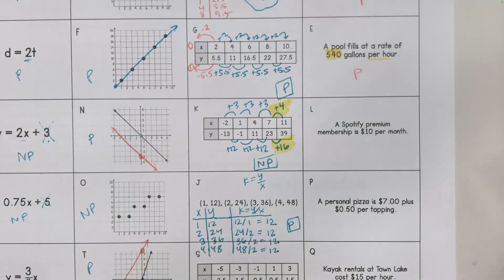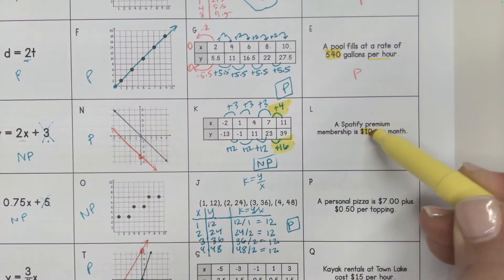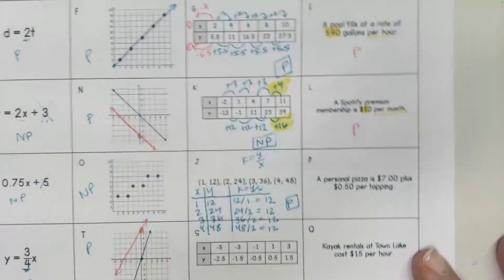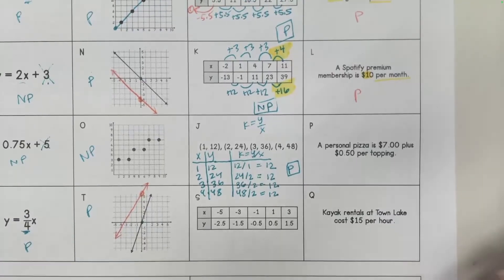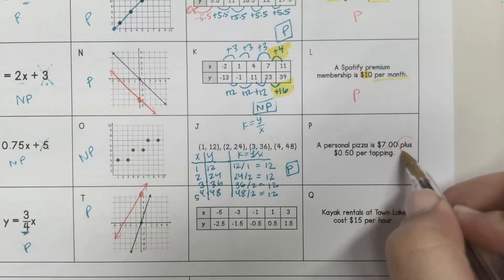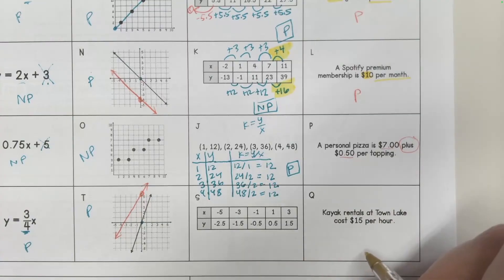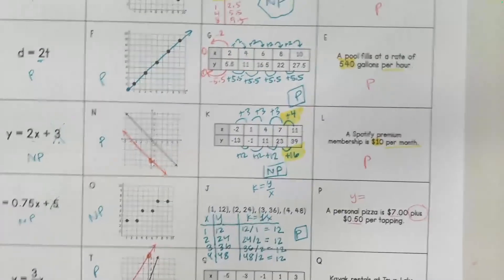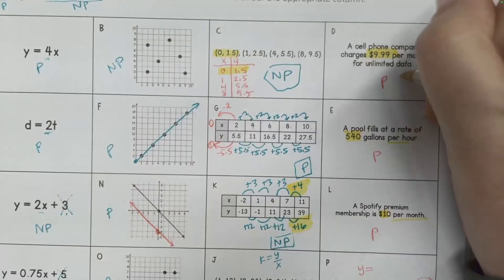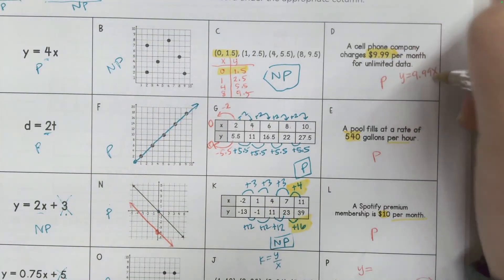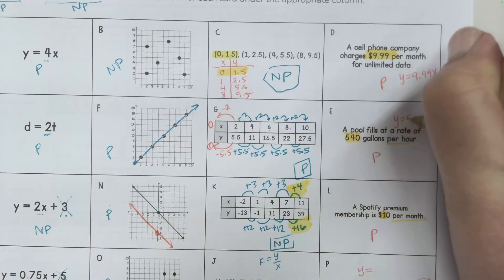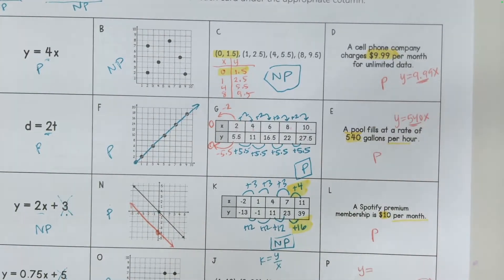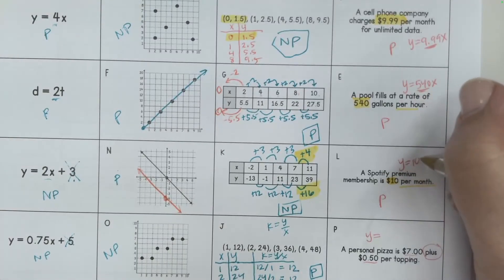A Spotify premium membership is paying $10 per month. Again, I'm starting at zero, so this is proportional. A personal pizza is $7 plus 50 cents per topping. So this is like if you were to make an equation, which by the way, all of these equations would have been, this one would have been y equals 9.99x. This one would have been y is equal to 540x because you always have your rate times x. This would be y is equal to 10x.